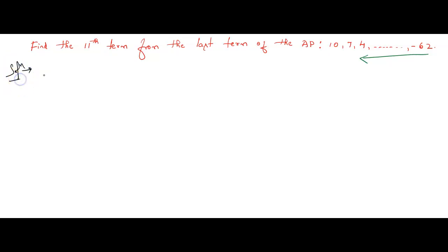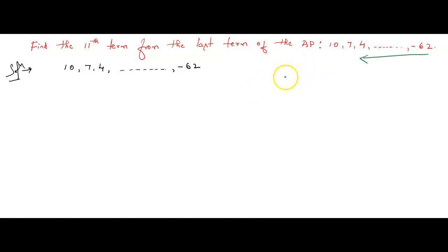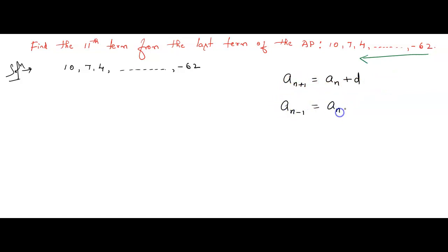Let me write the given data: 10, 7, 4 and so on, and the last term is minus 62. Children, have you learnt the method to find the next term and previous term — the succeeding term and the preceding term? I hope you know this logic: aₙ₊₁ can be written as aₙ plus d, and aₙ₋₁ equals aₙ minus d.